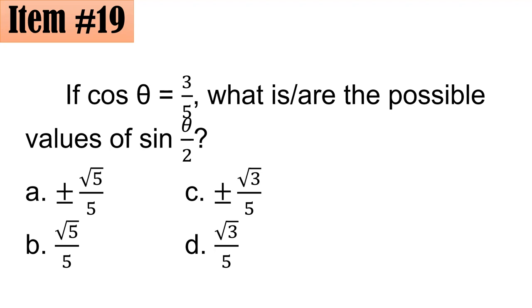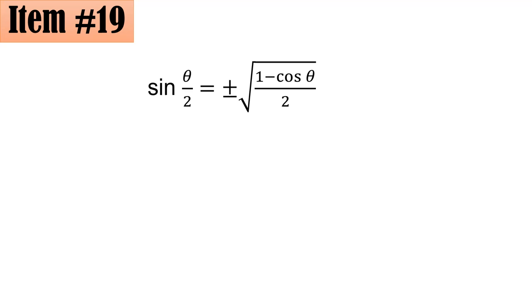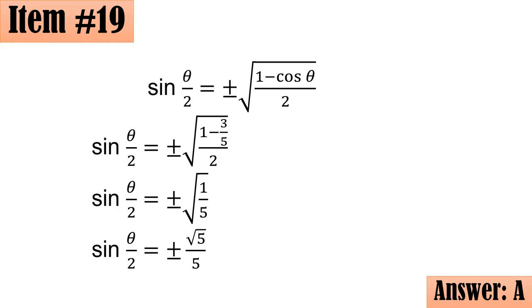We have a half angle identity that sine theta over 2 is actually equal to plus minus the square root of the quantity 1 minus cosine theta all over 2. Why plus minus? Because there's a tendency it could go to a quadrant where sine is positive or negative. By substitution with cosine theta equals 3 fifths, that's plus minus the square root of 1 minus 3 fifths all over 2. Using our calculators, sine theta over 2 is equal to plus and minus the square root of 5 all over 5. Letter A.